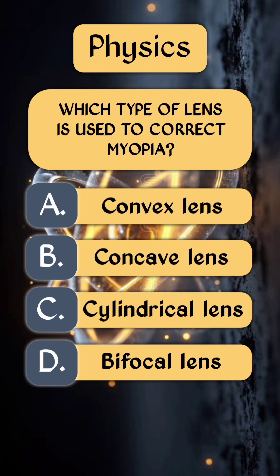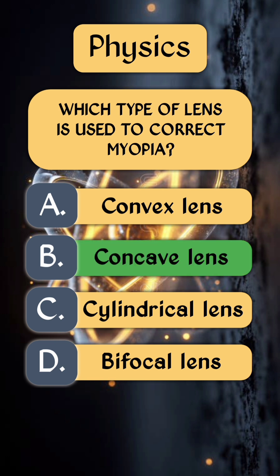Question 4. Which type of lens is used to correct myopia? The right answer is option B: concave lens.